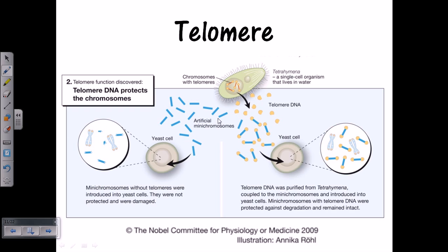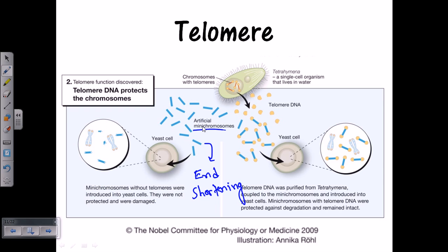A simple experiment demonstrates the function and importance of telomeres. Researchers took yeast cells and synthesized artificial mini chromosomes — very tiny chromosomes — and inserted them into the yeast cells. The result was that these artificial mini chromosomes without telomeres were much more vulnerable to damage, showing end shortening. After certain rounds of cell division, the chromosome length started to shrink very rapidly.